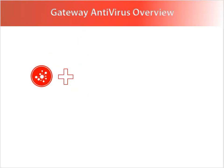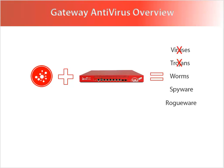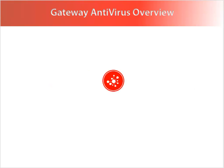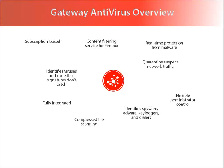Gateway Antivirus, or Gateway AV, is a fully integrated security subscription for your Firebox that can help you protect your network from these types of attacks. Gateway AV works in tandem with your Firebox to provide real-time protection against viruses, trojans, worms, spyware, and rogueware. Gateway AV scans traffic on all major protocols using continually updated signatures to detect and block all types of malware. Because Gateway AV is integrated with your Firebox, you have an easy-to-manage, cost-effective solution without additional hardware to purchase and maintain.